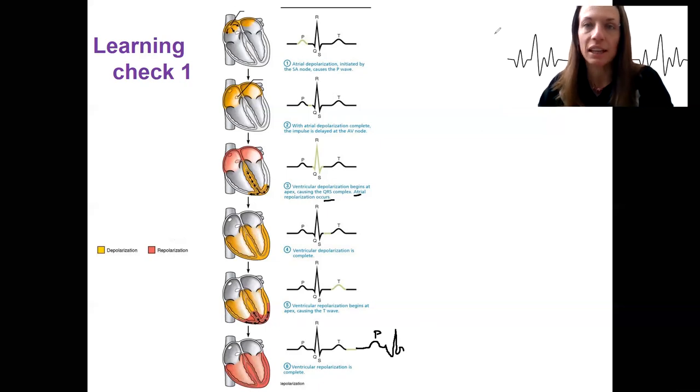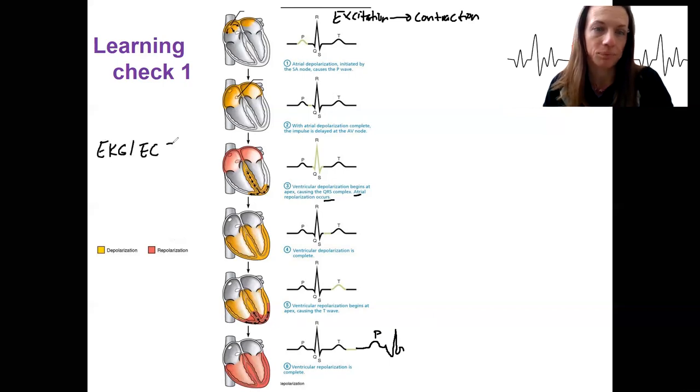Now what I like to do, that was your learning check. I like to relate these to what's happening at the heart muscle. So this is excitation, and then we're going to have contraction coupled to that. The EKG—just to remind you, EKG, ECG, electrocardiogram—isn't actually measuring contraction, but these electrical events are going to correspond to key contraction and relaxation events. So with the P wave, that atrial depolarization is going to correspond to atrial contraction.